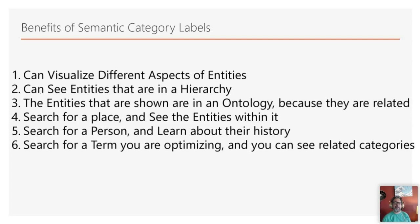The idea behind these semantic category labels is that they can help you visualize different aspects of entities. You can see those entities in a hierarchy — specifically an ontology, because the things within it are related to each other. If you search for a place, you'll see the entities within it. If you search for a person, you'll learn about their history. Where this gets interesting is that you can search for a keyword term and see related categories, which might be things you want to include on the page you're optimizing.